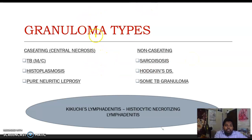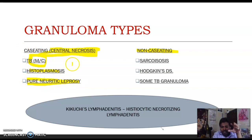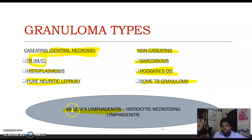Another classification of granulomas is based on necrosis. Caseating granulomas contain central cheesy, amorphous eosinophilic material. Classic examples are TB, histoplasmosis, and paucibacillary leprosy. Non-caseating granuloma causes include sarcoidosis, Hodgkin's disease (a lymphoma), some TB granulomas, and Kikuchi's lymphadenitis (histiocytic necrotizing lymphadenitis — a lymph node disease).